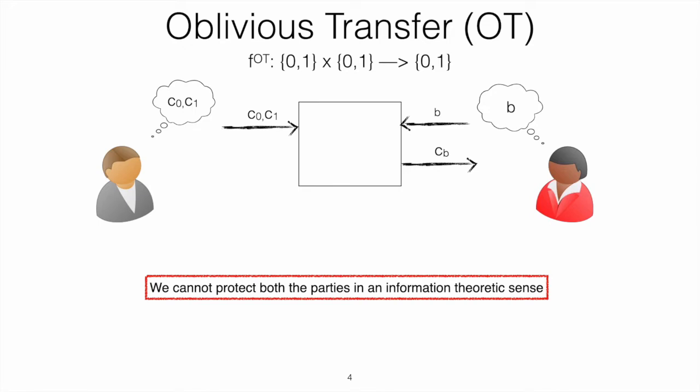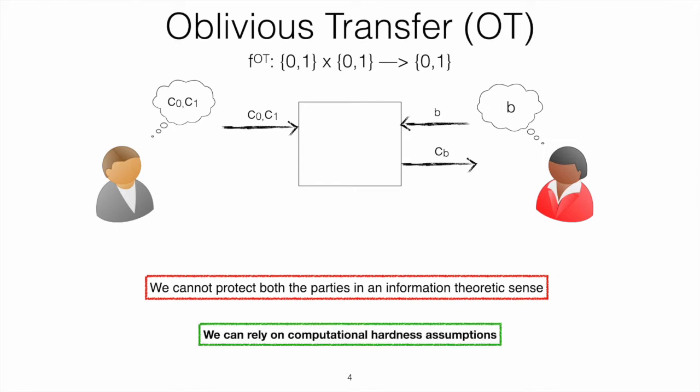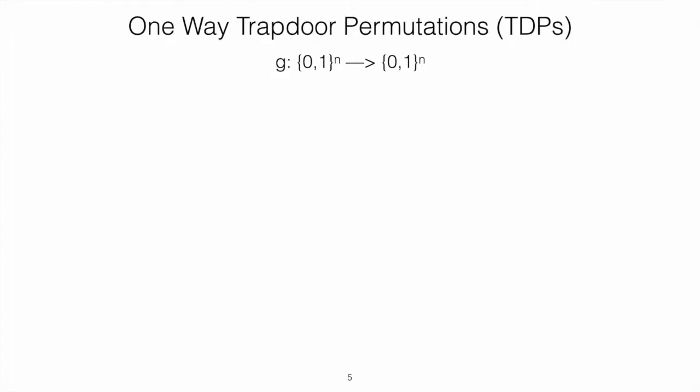So we need to rely on computational assumptions. To be precise, we can have statistical security only against one party, but we cannot get statistical security against both parties. One way to circumvent these impossibility results is to rely on computational assumptions. What we consider in this work is the assumption that one-way permutations exist.